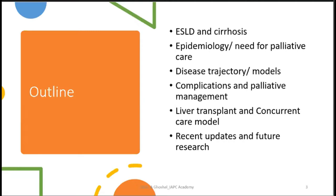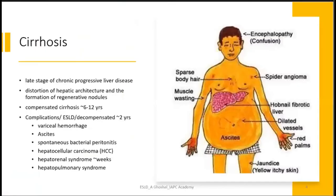Cirrhosis is a late stage of chronic progressive liver disease where the liver architecture is distorted and regenerative nodules form. Importantly, cirrhosis can be compensated or decompensated. In compensated cirrhosis, the patient may be under your care for six to twelve years. However, when liver functions become deranged, we call it decompensated cirrhosis or end-stage liver disease, and typically from that point we have around two years.